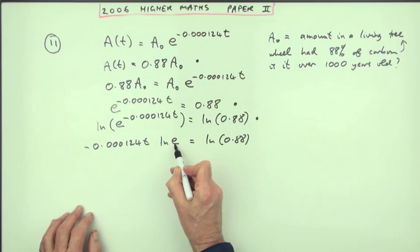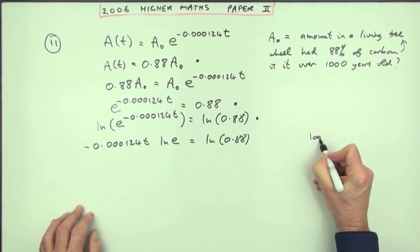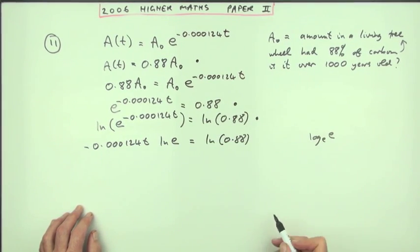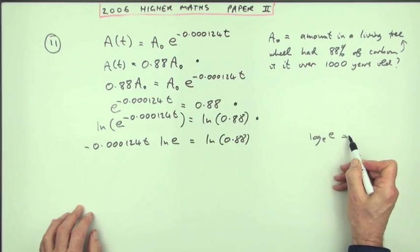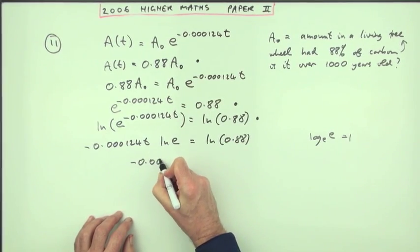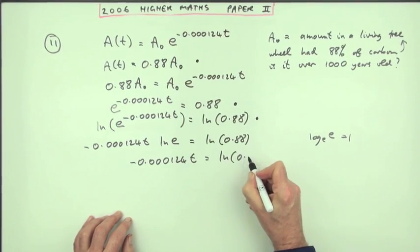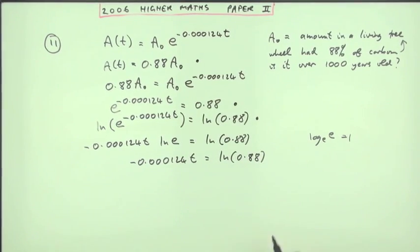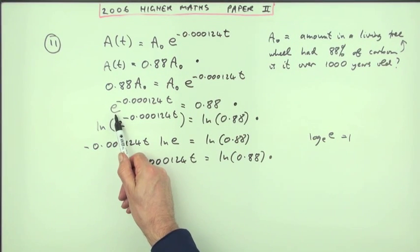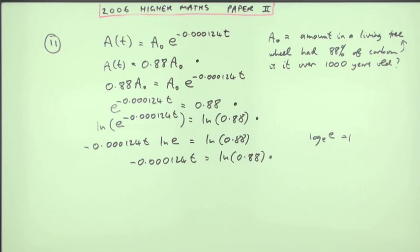And of course ln of e, log base e of e - what power of e is e? - is equal to one. So you just end up with negative 0.000124t equals ln of 0.88 as before for that fourth mark. If it's base e on this side then it'll be log base e on the other one.